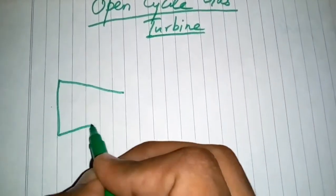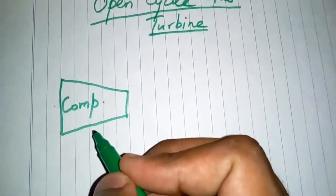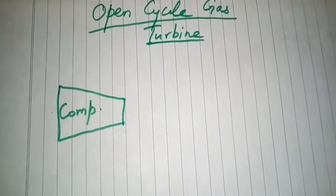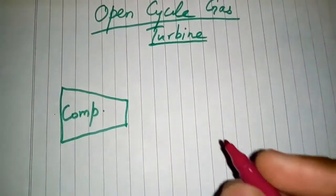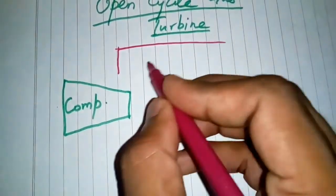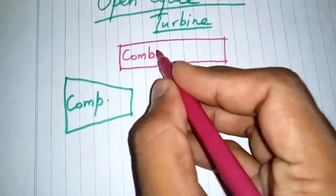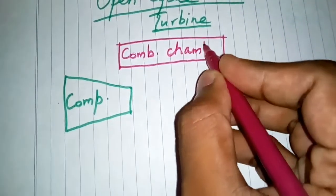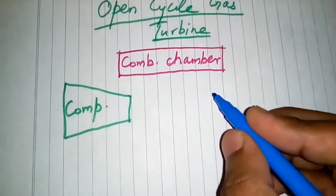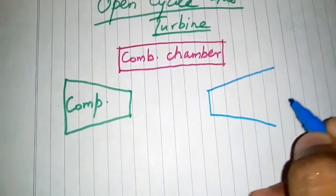This is the compressor. The second important component of the open cycle gas turbine is the combustion chamber — here we have the combustion chamber. The next component is the turbine, and here we have the turbine.